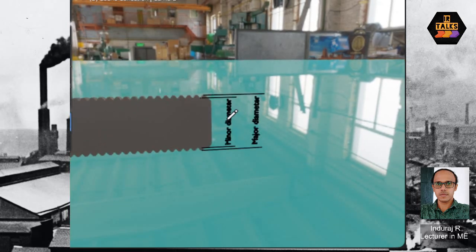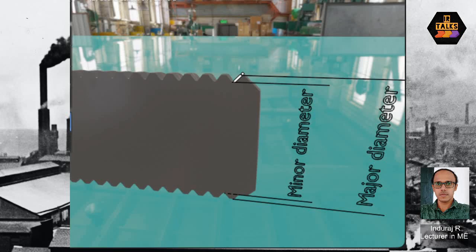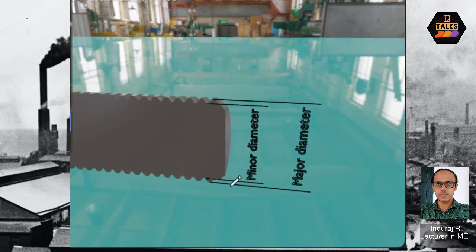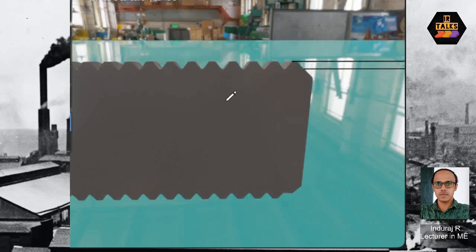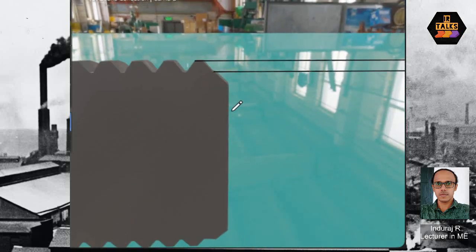The major diameter corresponds to the crest — the top portion of the thread. The distance across the top portion is the major diameter. The depth of thread is the height from root to crest, measured perpendicular to the axis. The root is the bottom of the thread profile, and the crest is the top.